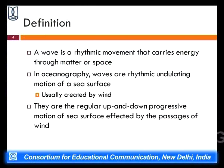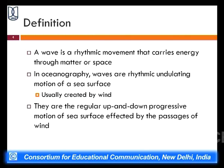The classic definition of waves is that a wave is a rhythmic movement that carries energy through matter or space. In any field of science, a wave is a rhythmic movement which carries energy through mass, matter, or space, with a medium in which the rhythmic movement takes place. In oceanography, waves are rhythmic undulating motion over a sea or ocean surface created by wind — a regular up-and-down progressive motion of the sea surface affected by the passage of wind.